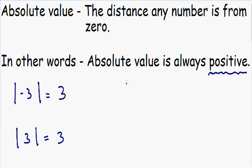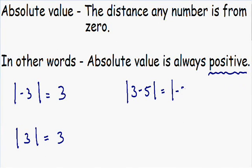Let's go over another example. Let's say we have the absolute value of 3 minus 5. You can think of absolute value as parentheses, so let's simplify the inside of the parentheses first. Inside of the absolute value we have 3 minus 5, which is equal to negative 2. So we have the absolute value of negative 2. Once again we know the absolute value is always positive, so the absolute value of negative 2 is going to be positive 2.